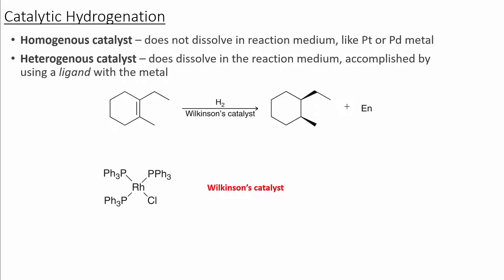A homogeneous catalyst would be like platinum or palladium — it would create a slurry instead. A heterogeneous catalyst is soluble in the reaction medium and can use a ligand in order to make the catalyst more soluble.